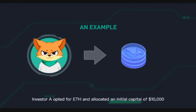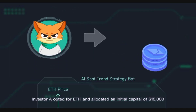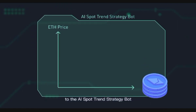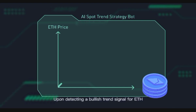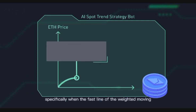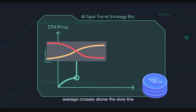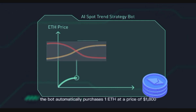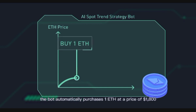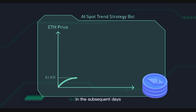Investor A opted for ETH and allocated an initial capital of ten thousand dollars to the AI Spot Trend strategy bot. Upon detecting a bullish trend signal for ETH — specifically when the fast line of the weighted moving average crosses above the slow line — the bot automatically purchases one ETH at a price of one thousand eight hundred dollars.